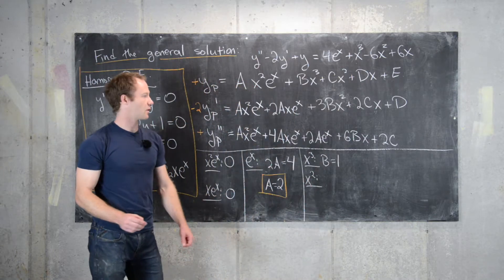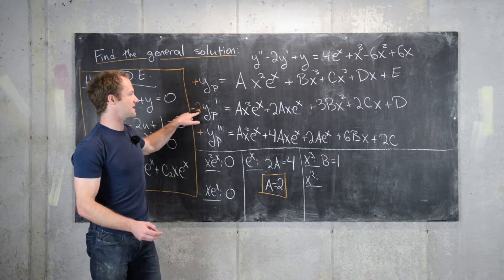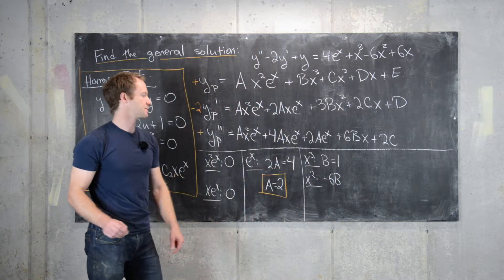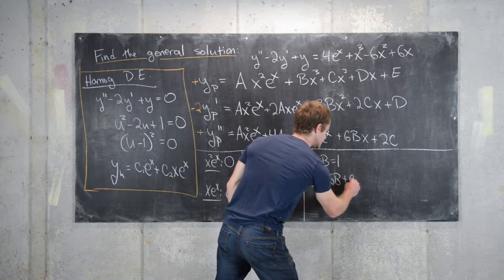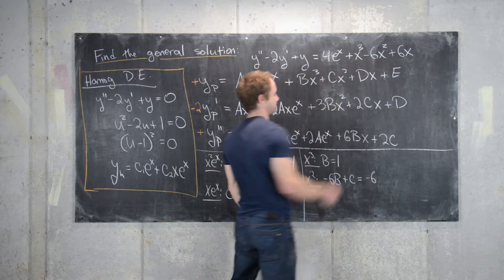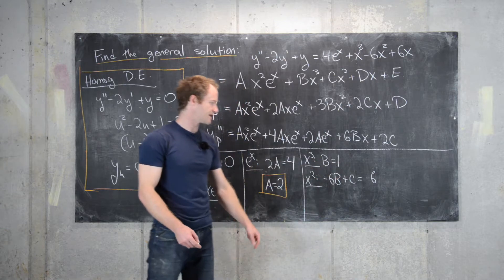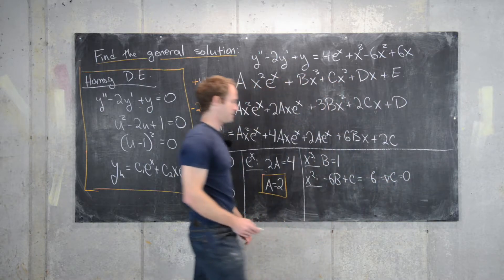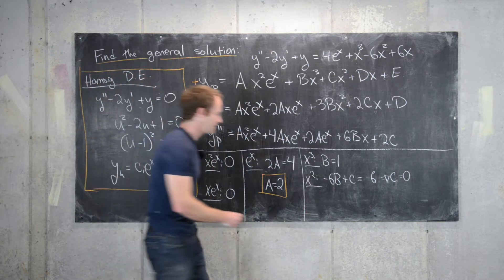For the x² coefficients: none in the second derivative; from the first derivative there are 3b terms but we subtract twice that, giving -6b; and c from the zeroth derivative. So -6b + c = -6. Using b = 1, we get -6 + c = -6, so c = 0.